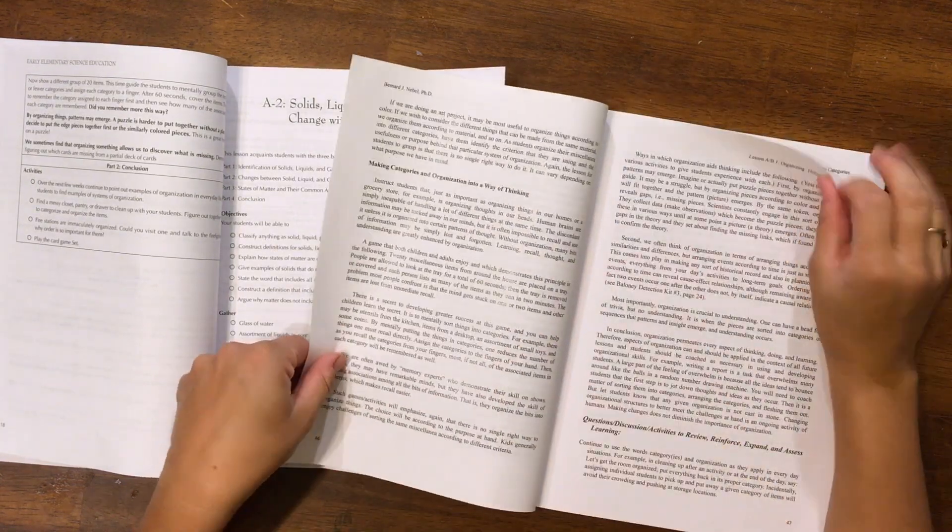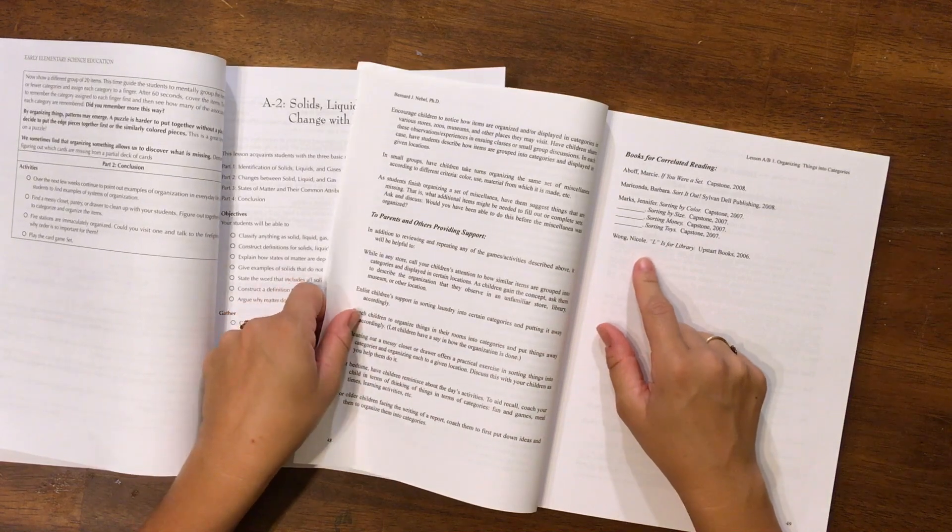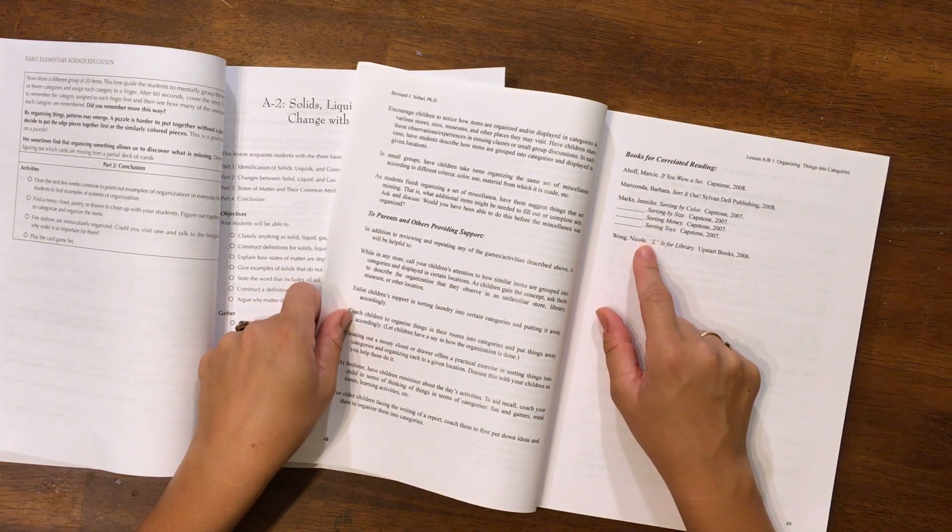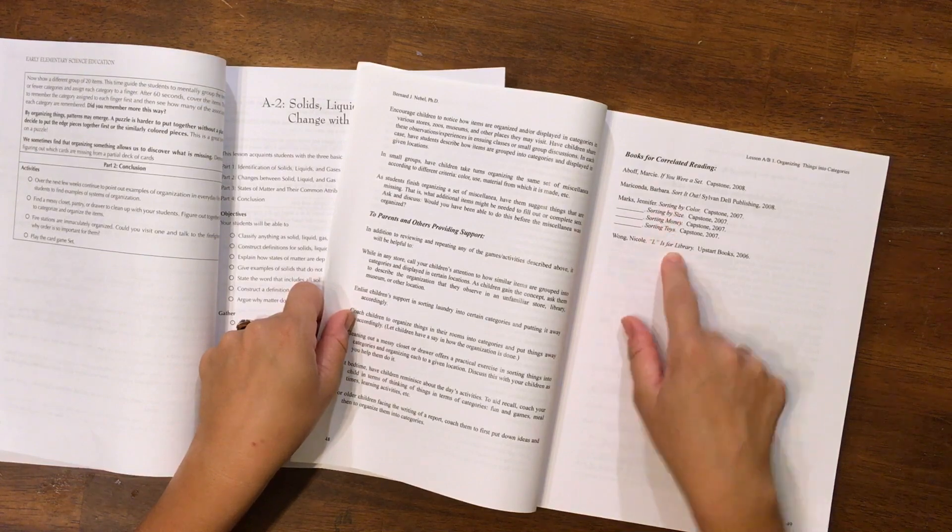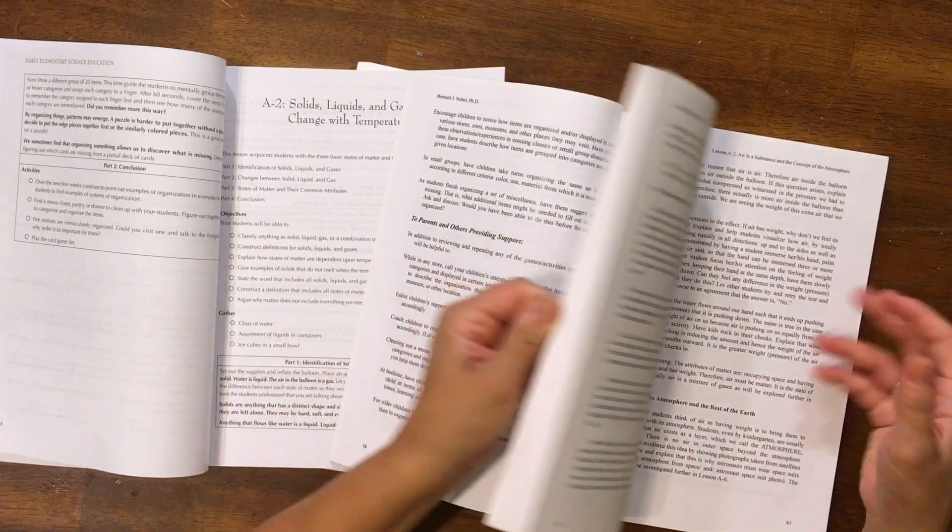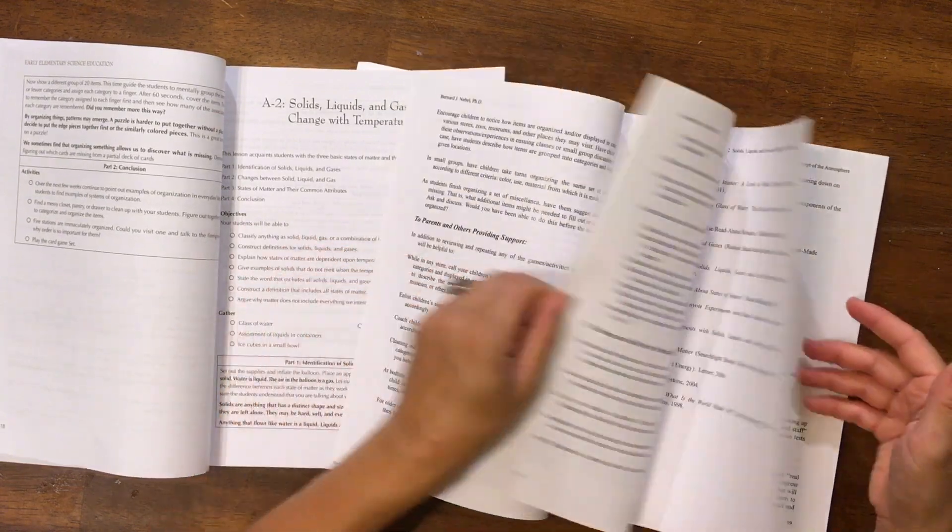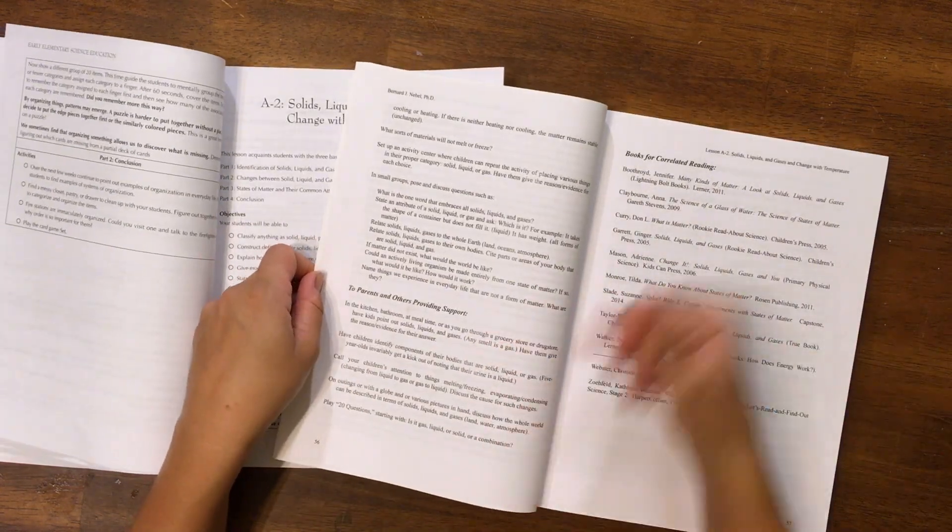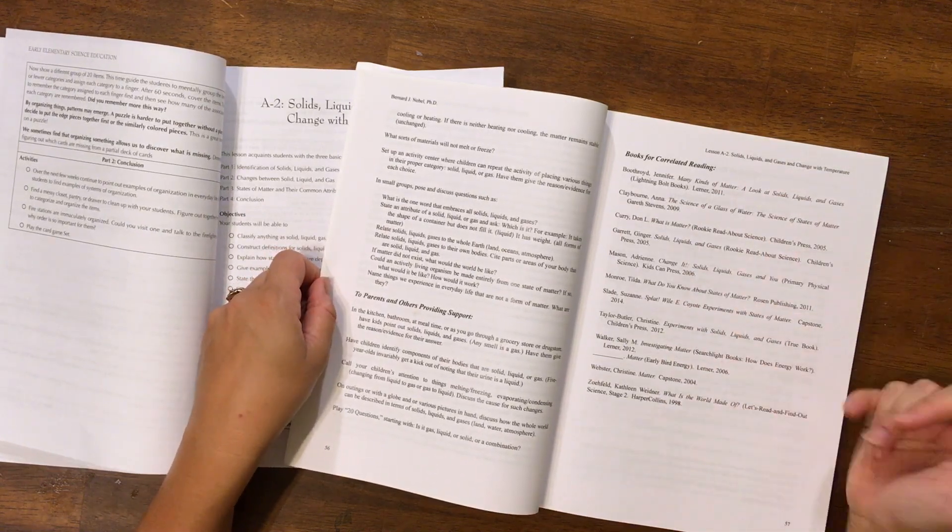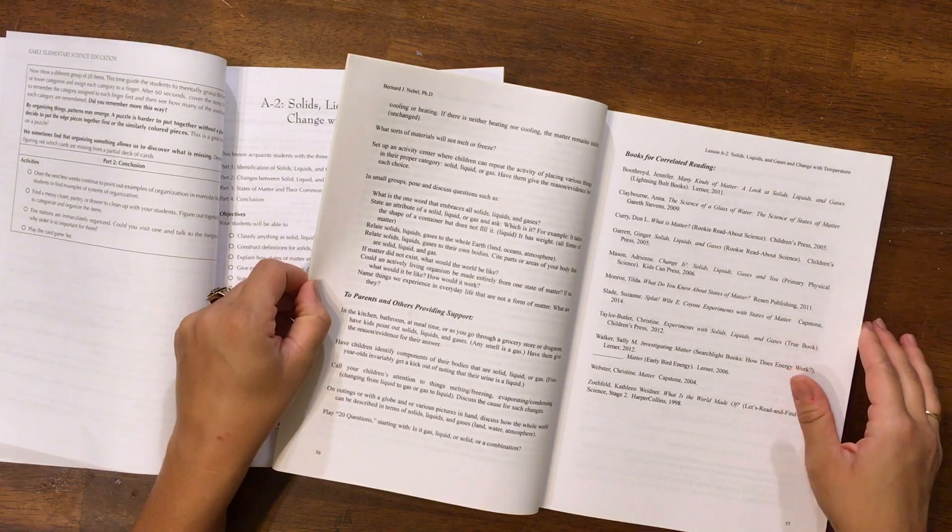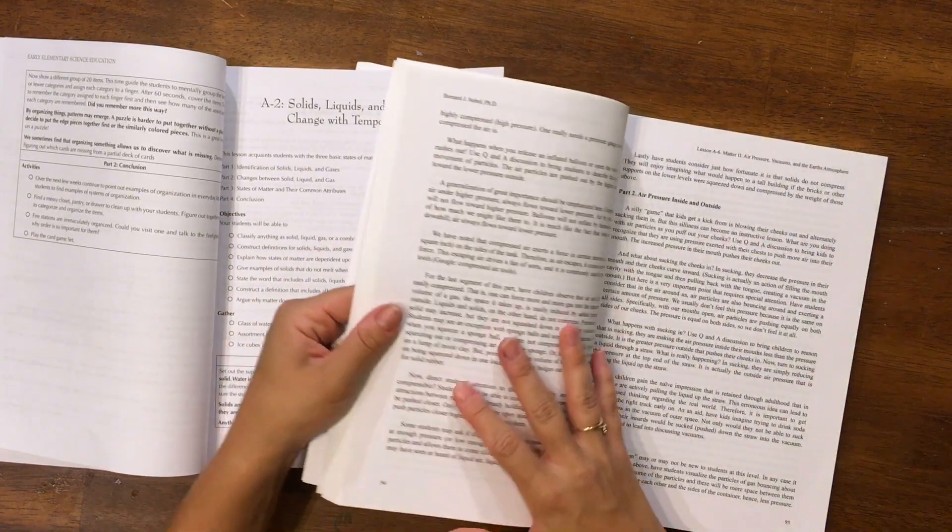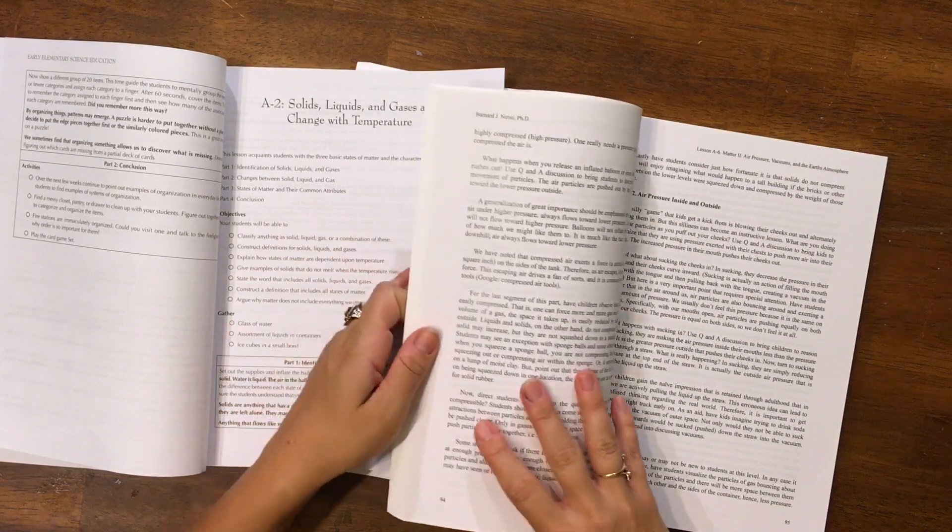Also, this version has literature recommendations. There's only a few for this lesson, but most of the lessons have like a full page. Look at how many books for solids, liquids, and gases, all of these. And that's worth it right there, just all of the different literature selections. I love that about this curriculum.